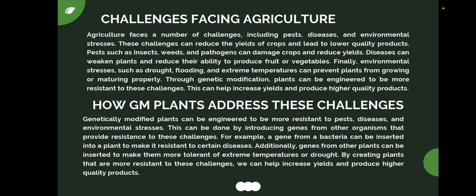The next use of genetically modified plants addresses challenges facing agriculture. Agriculture is facing a number of challenges including pest, disease, and environmental stresses, which destroy crops in vast amounts. These challenges can reduce the yield of crops and lead to lower quality products. Environmental stresses such as drought, flooding, and extreme temperature can prevent plants from growing or maturing properly. Through genetic modification, plants can be engineered to be more resistant to these challenges, helping to increase yields and produce high quality products.